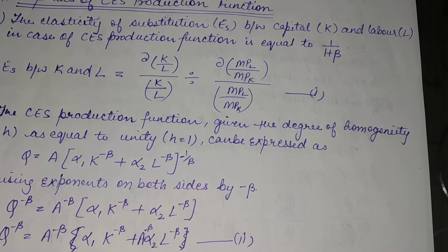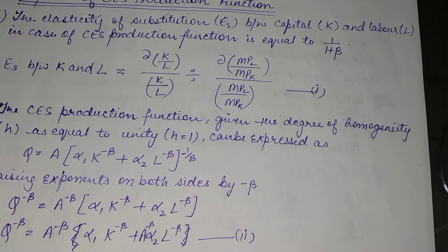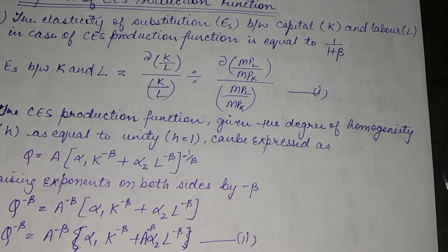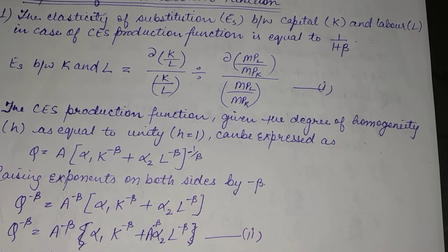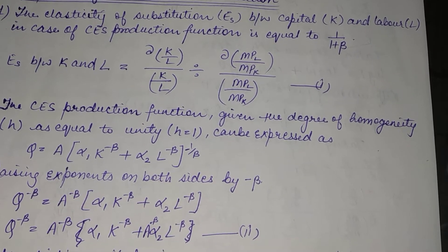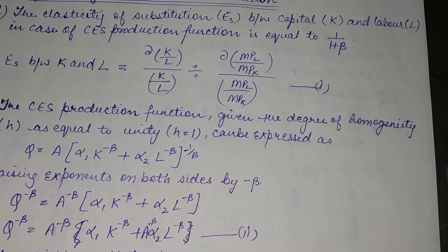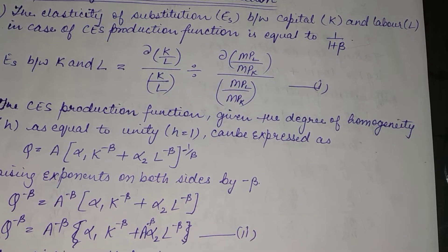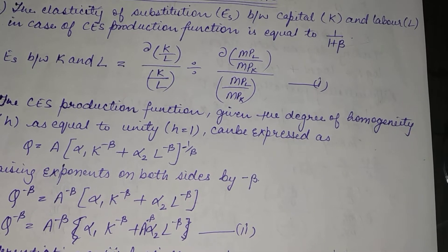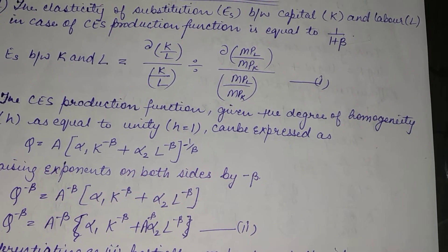Now, the CES production function given the degree of homogeneity H equal to unity, that is H = 1, can be expressed as: Q = A[α₁K^(−β) + α₂L^(−β)]^(−1/β). In the real equation we have the whole power as −H/β, but since H = 1, we write −1/β here.